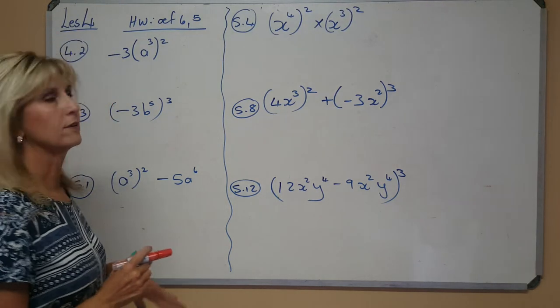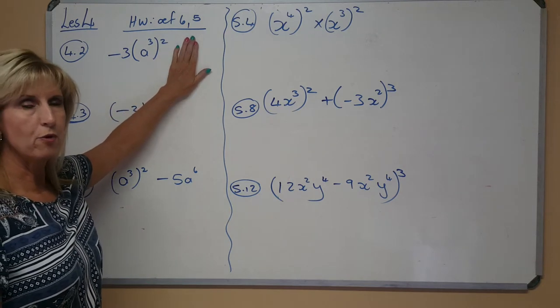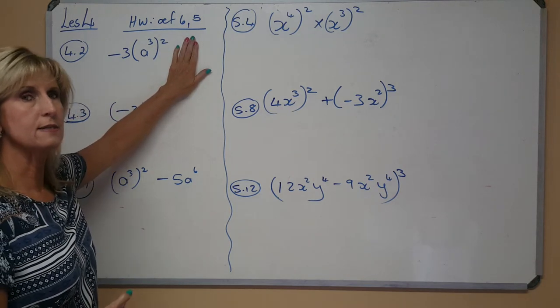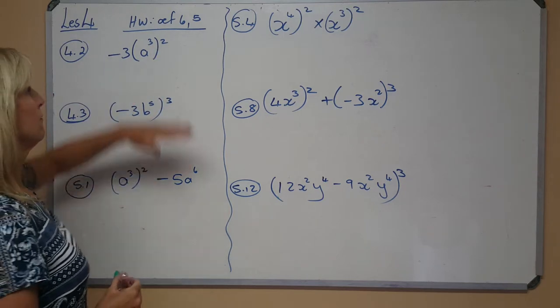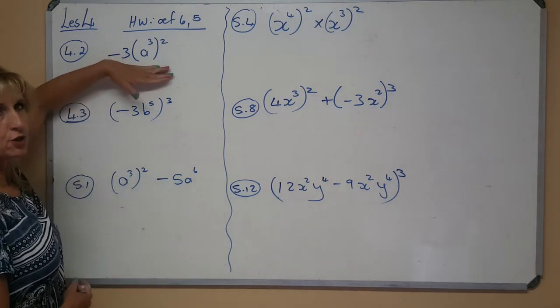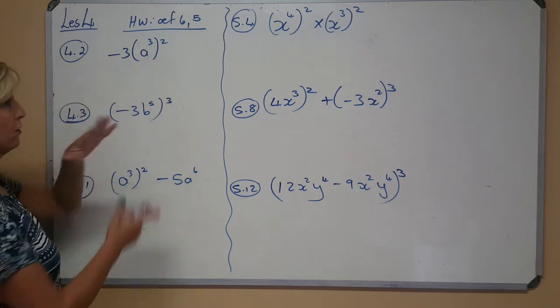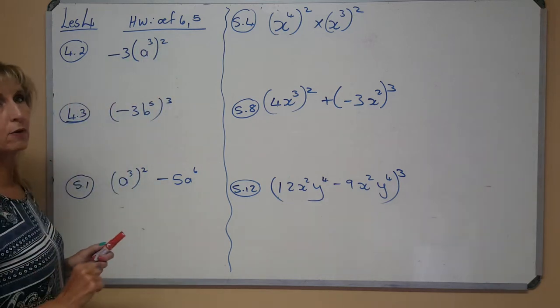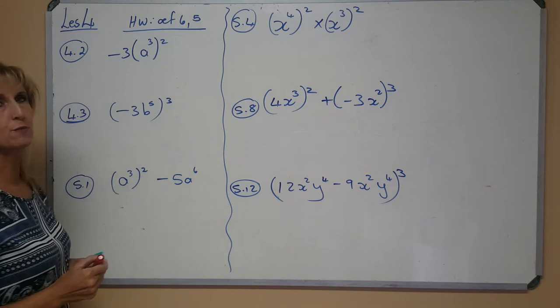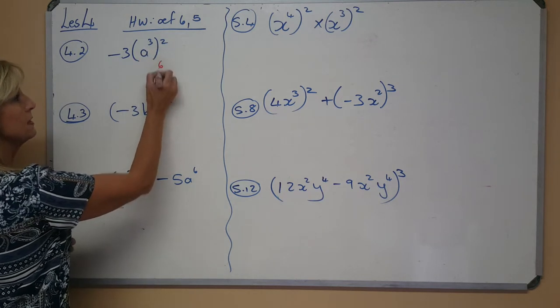Hello grade 8's, we're making the homework of exercise 6.5 in this lesson 4. First thing, if I ask you to do this, I'll say simplify. The brackets say that you must time your exponents, so you're going to have 3 times 2 is 6 of the base of a.